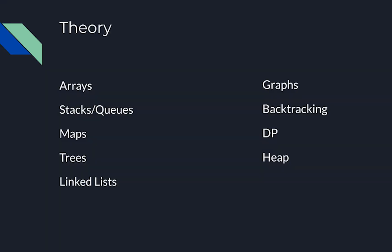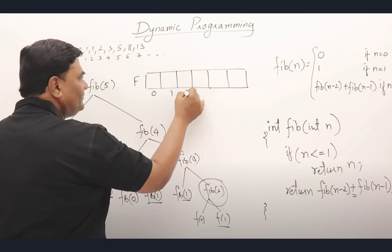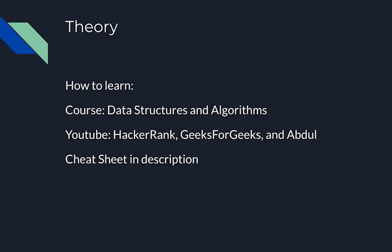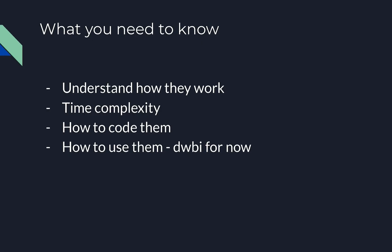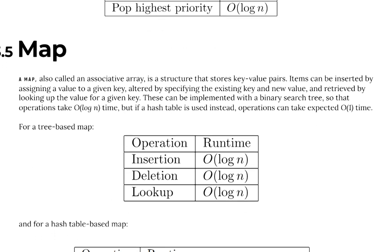Now let's talk about the theory - this is the part that you absolutely need to know. These are the data structures and algorithms: arrays, stacks, queues, maps, trees, linked lists, graphs, backtracking, dynamic programming, and heaps. You can learn these through a university or online course called data structures and algorithms, and through YouTube videos. HackerRank is probably the best for the base understanding of these - they have videos for all of them with animations. There's also a great channel by Abdul who explains a lot of this too. You're gonna need to understand how they work, all their time complexities, how to code them up, and I'll be putting up a cheat sheet I use to review before every single interview in the description.